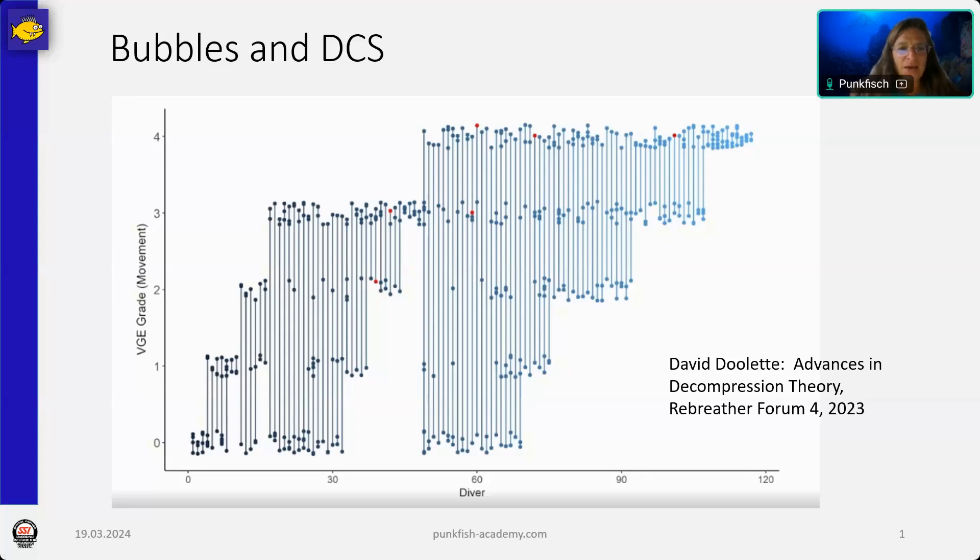What do we have here? We have people doing dives, dives that are meant to provoke bubbles and that are meant to provoke single cases of DCS because they were meant to compare different aggressive diving profiles. We have little dots. Every dot is one dive and is one bubble measurement after a dive. VGE grades, bubble grades after dives from zero, no bubbles, to four, lots of bubbles. And every line is one diver, so it's arranged by persons doing the same dive.